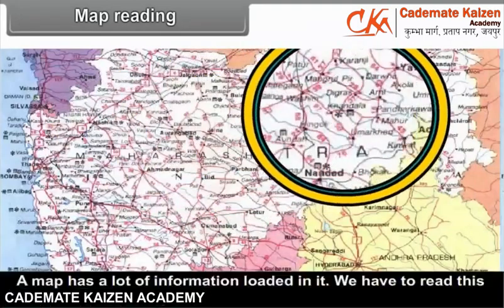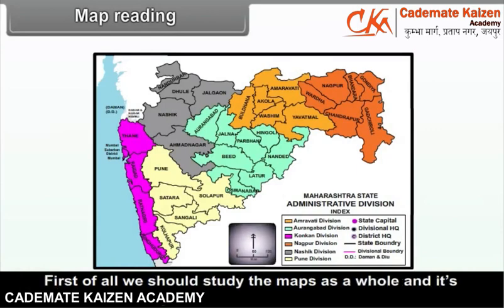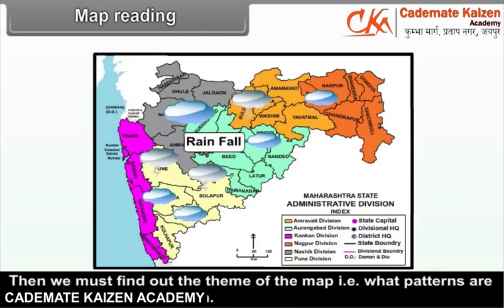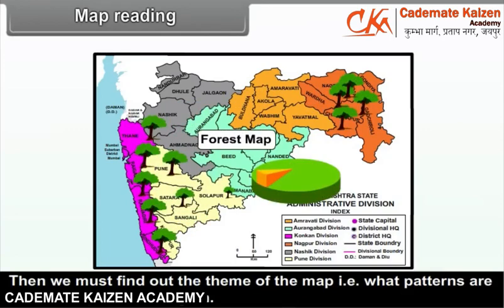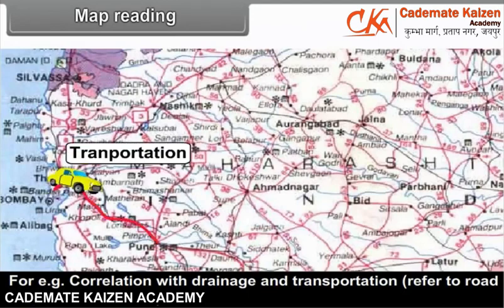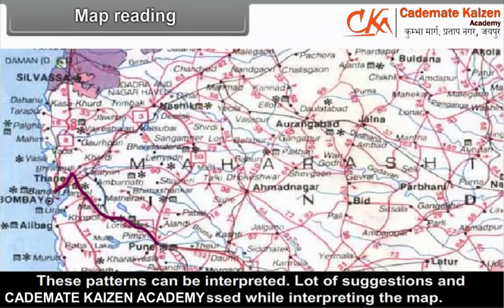Map reading: A map has a lot of information loaded in it. We have to read this information carefully. First of all, we should study the map as a whole and its elements. Then we must find out the theme of the map, i.e., what patterns are found in a particular region. For example, correlation with drainage and transportation — refer to the road map of Maharashtra. These patterns can be interpreted, and many suggestions and solutions can be processed while interpreting the map.